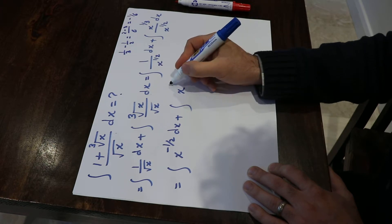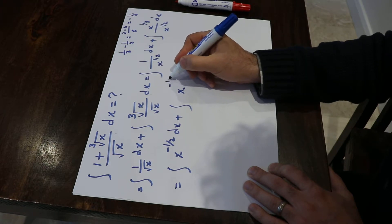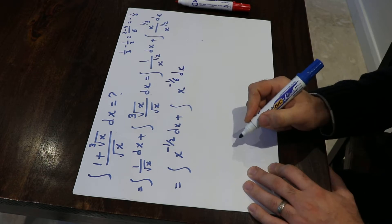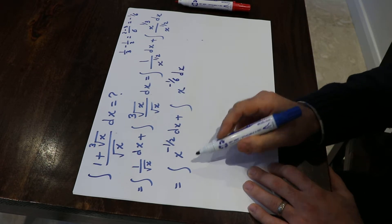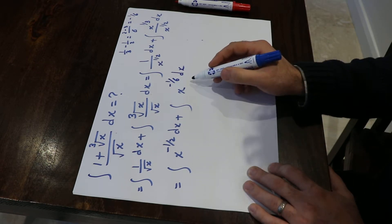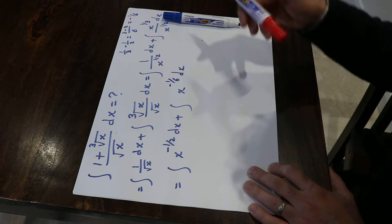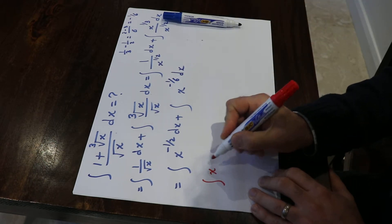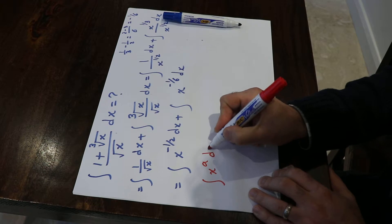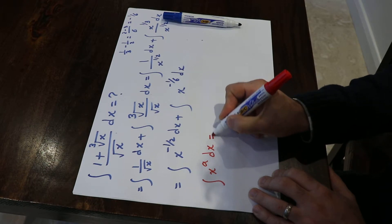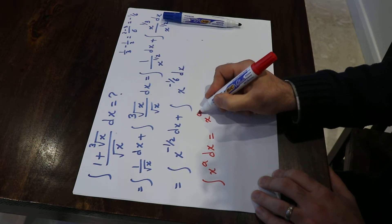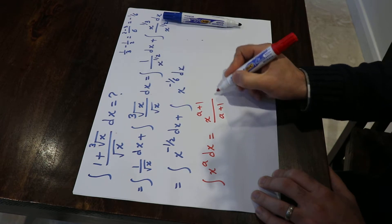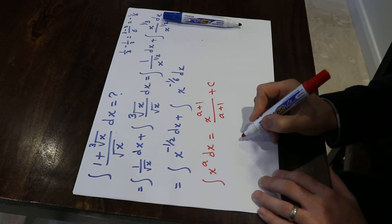Therefore, this will be x to the power of minus 1/6 dx. Now, to solve this integral, you need to know one formula: the integral of x to the power of a dx is equal to x to the power of a plus 1, divided by a plus 1, plus C, the constant.